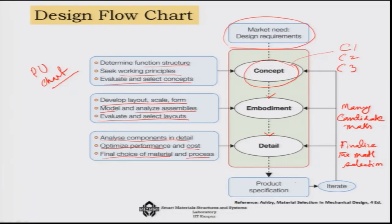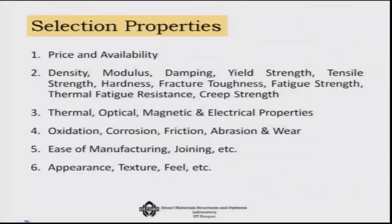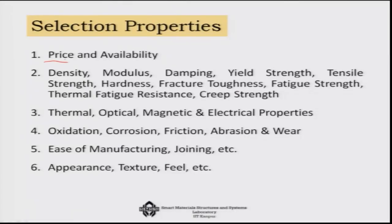We then see how the product specifications are satisfied, and we can iterate that process. If we are not happy, we may go back to the concepts, work with concept 2 or concept 3, and carry out the same process again until we are satisfied with the solution. When selecting a particular material for a particular function, the first important point to keep in mind is the price and availability of the material.